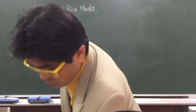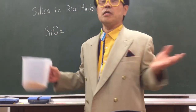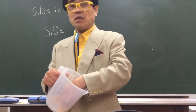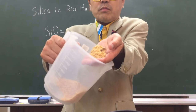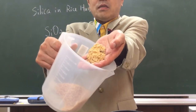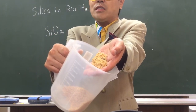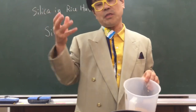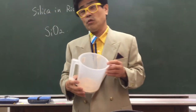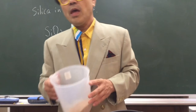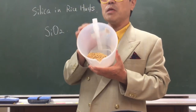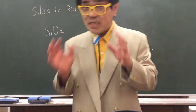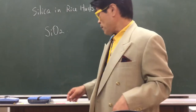Rice husk — especially in countries that eat rice and use chopsticks, people are familiar with this. It's the outer shell of rice. After harvesting and milling rice, we get a lot of this, and usually people think it's waste — but it's not waste.